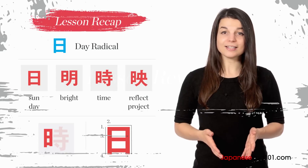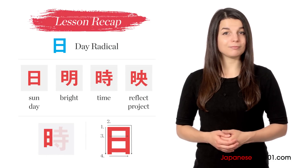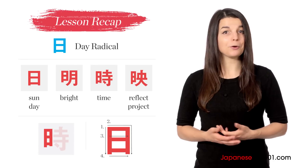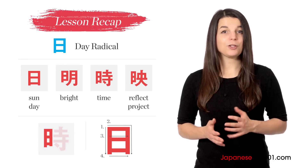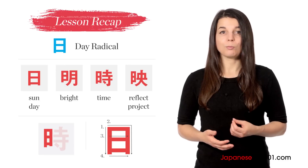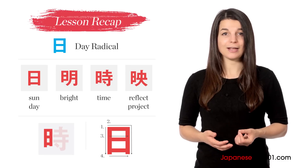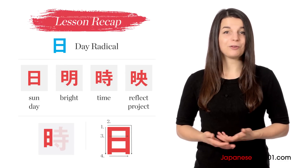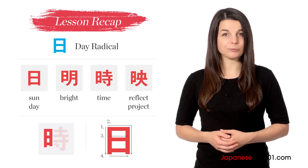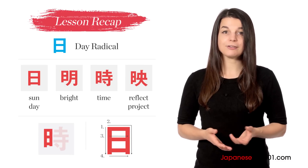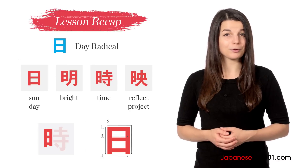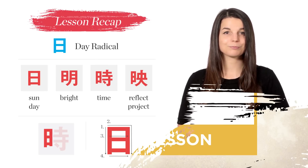In this lesson, you learned about the day radical. It looks like this and represents the sun or day. You also learned the kanji characters for sun or day, bright, time, and reflect or project, in which this radical appears. It usually appears in the left position, and it's written with four strokes: one vertical, a right-hand corner stroke, and two horizontal strokes.